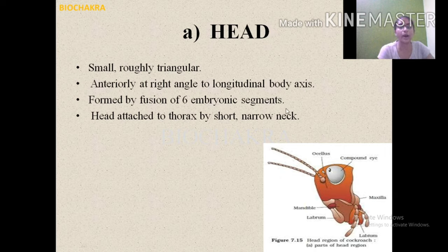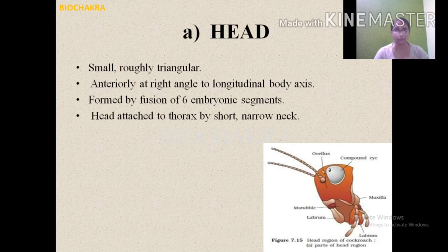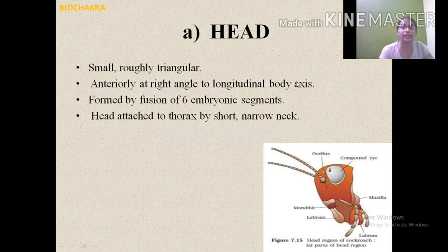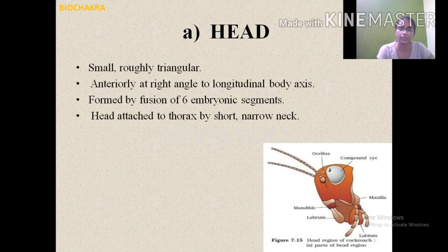The sclerites in the head region fuse together to form the head capsule. The neck provides flexibility, allowing the cockroach to move in different directions. The head bears antennae and downward-directed mouthparts — including maxilla, mandible, labrum, and labium.